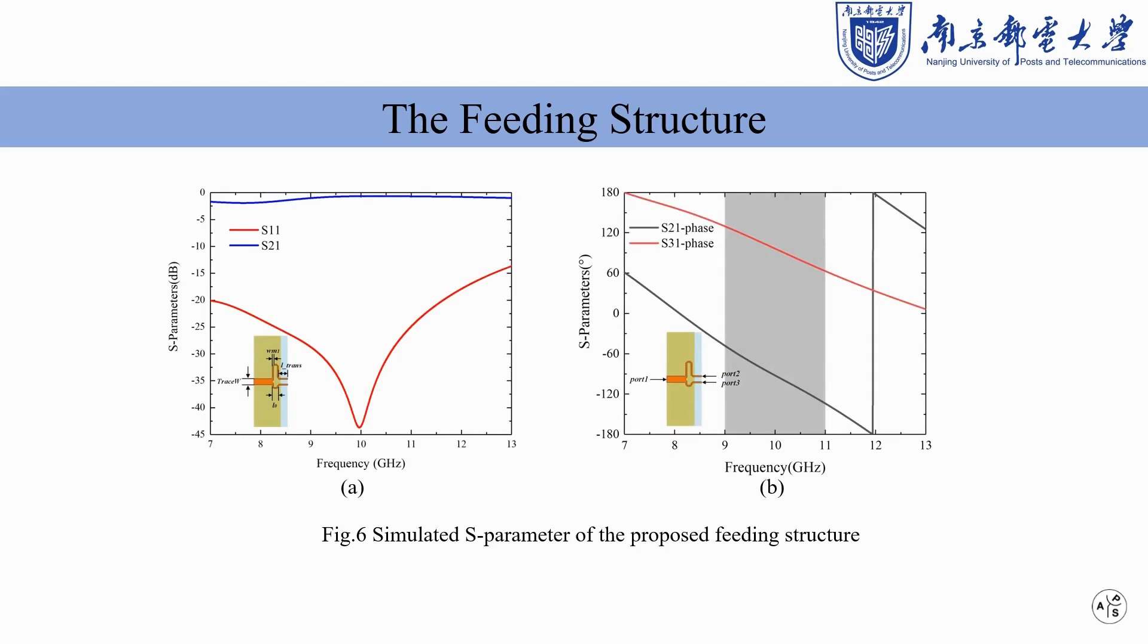In order to prove the current of parallel strip lines is opposite, two ports are added at the end of the balun in CST microwave studio, and the simulated phases of S21 and S31 are shown in FIG6b. The phase difference between S21 and S31 is indeed approximately equal to 180 degrees.